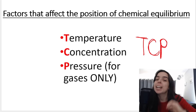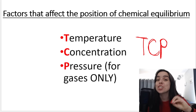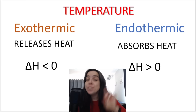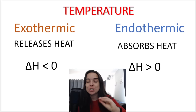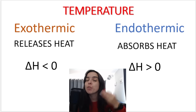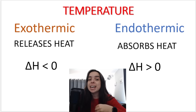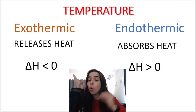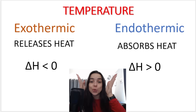In this lesson, we're going to look at how temperature affects the position of chemical equilibrium. The first thing you need to remember when dealing with temperature is that we get two different types of reactions: an exothermic reaction or an endothermic reaction.